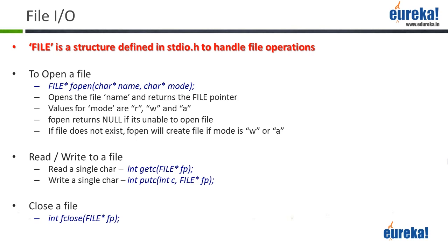So how do we make use of this data type? Firstly, you need to open the file. To open a file, you use the function fopen. The function fopen takes the name of the file as the first parameter, and the second parameter is the mode. The mode can be R, W, or A. R means you're opening it in read mode, W means you can write to the file, and A means you're opening the file in append mode - writing to the end of the file. Once you open the file, fopen will return a handle or pointer of type FILE star.